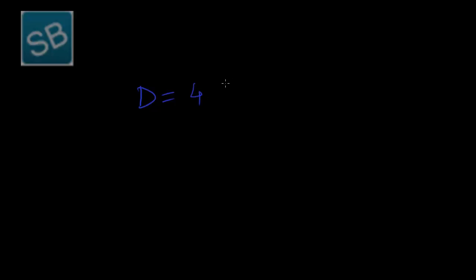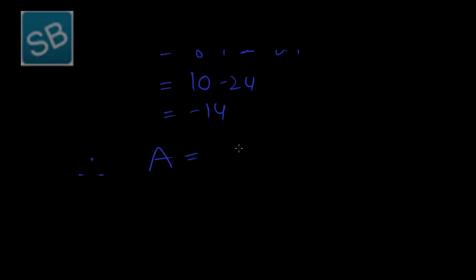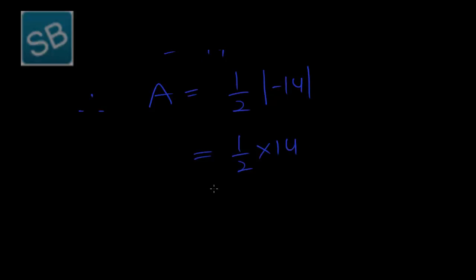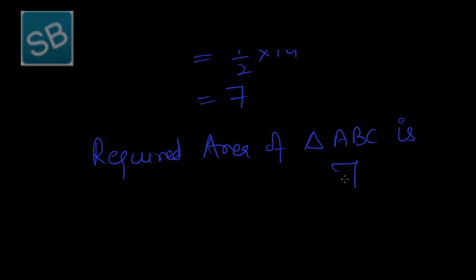Expanding along row 1: D equals 4 times (6−4) minus 1 times (6−8) plus 1 times (24−48). So we get 4×2 = 8, minus 1×(−2) = +2, and 24−48 = −24. Therefore D = 8 + 2 − 24 = −14. The required area is half of |D| = half of |−14| = half of 14 = 7. Therefore, the required area of triangle ABC is 7 square units.